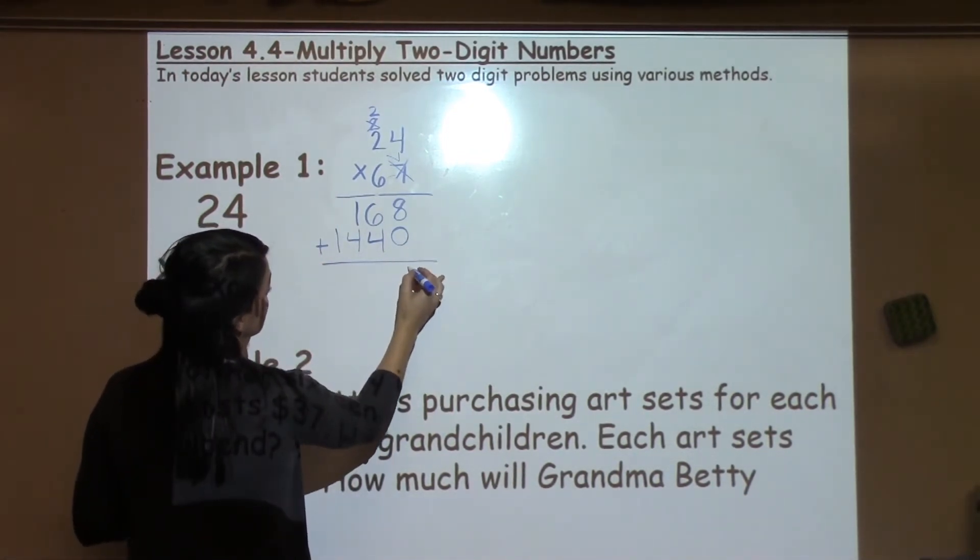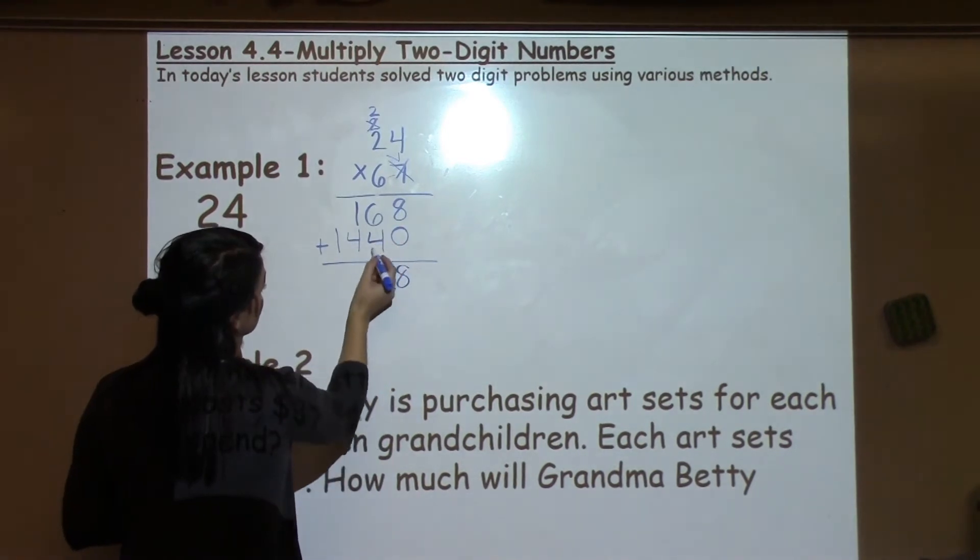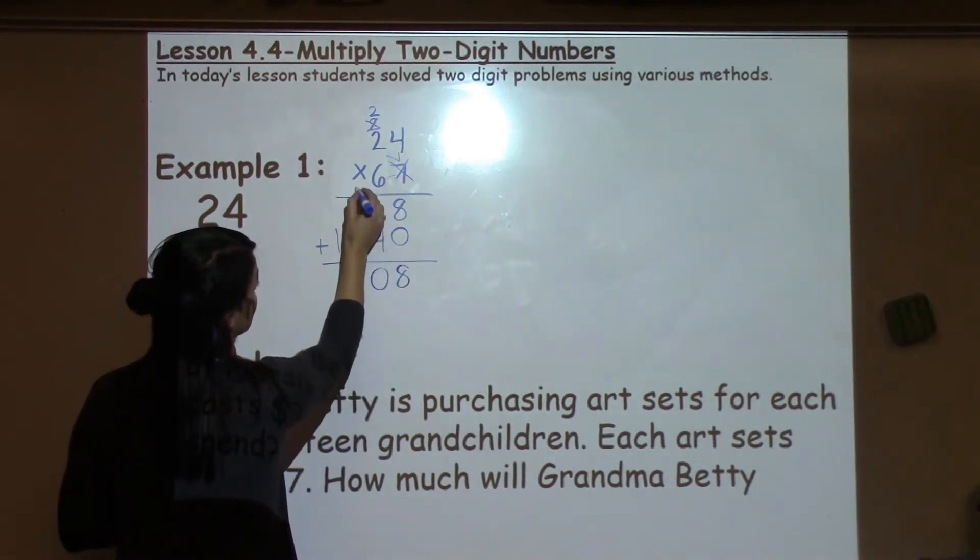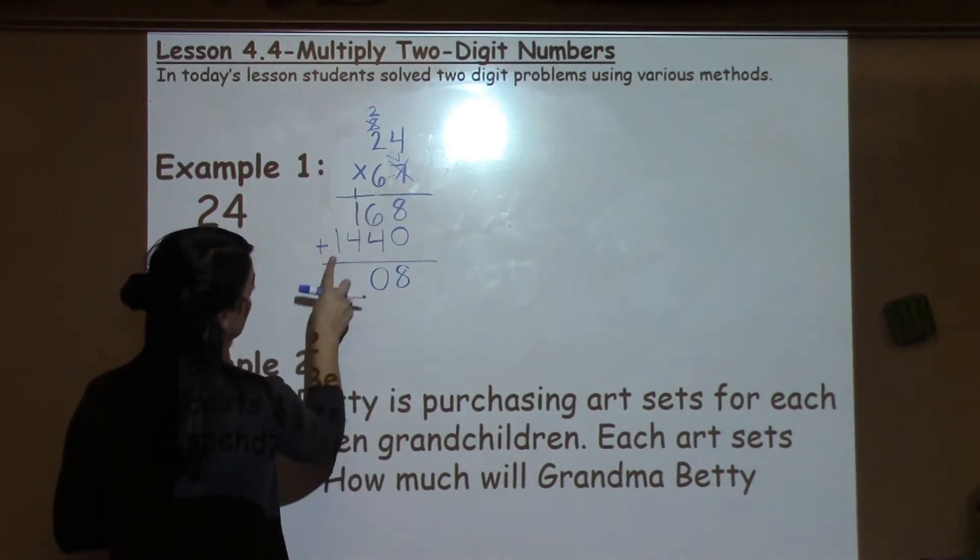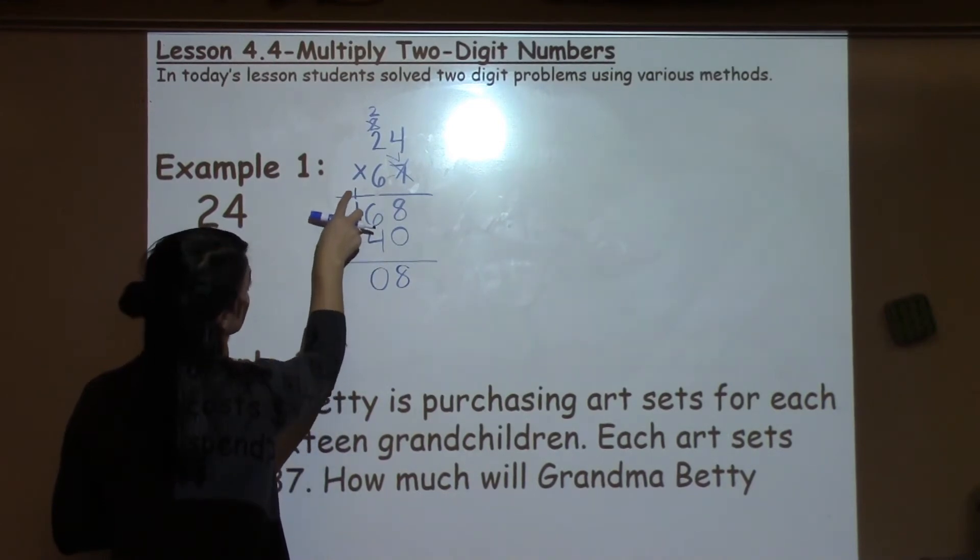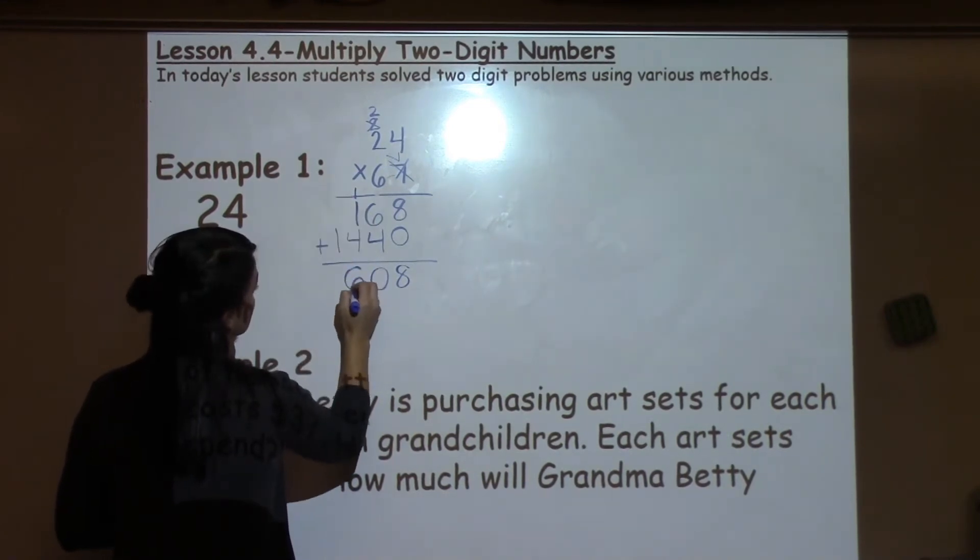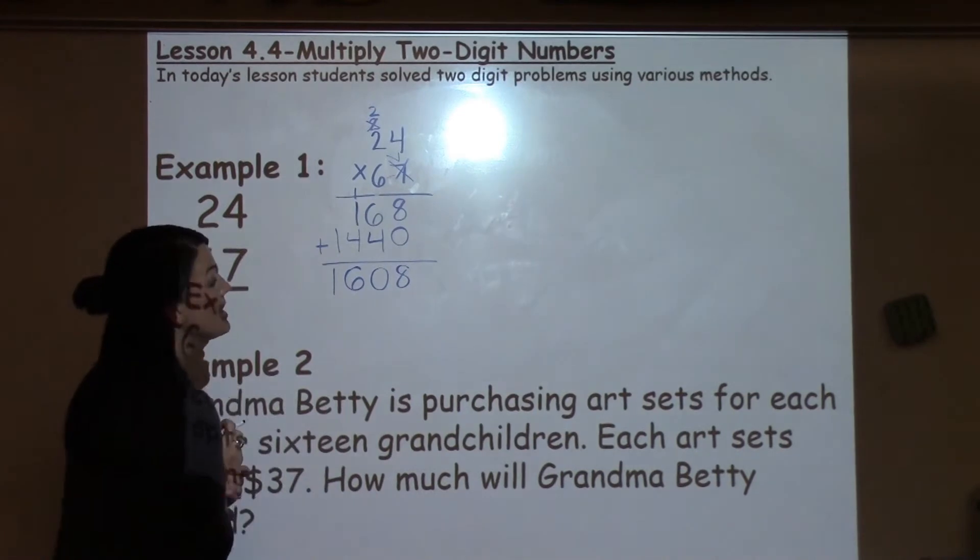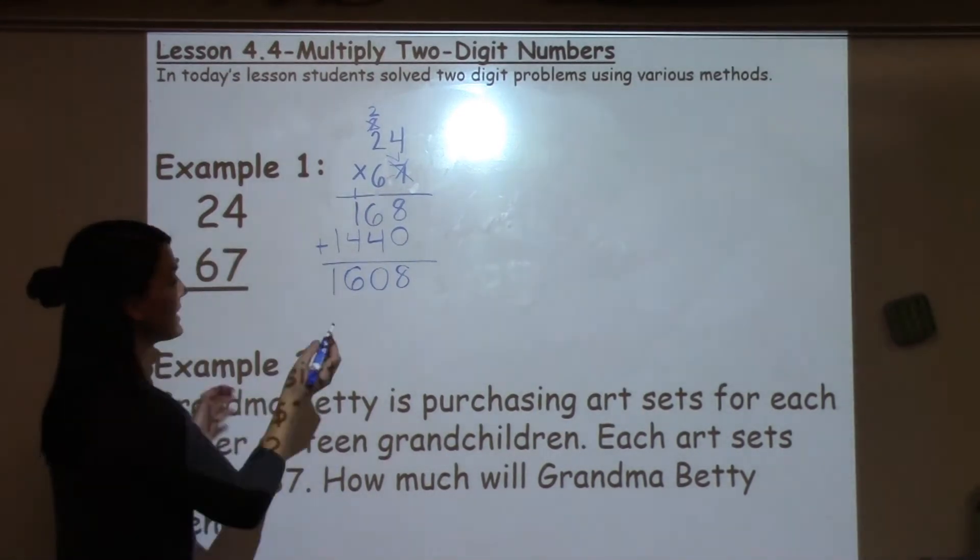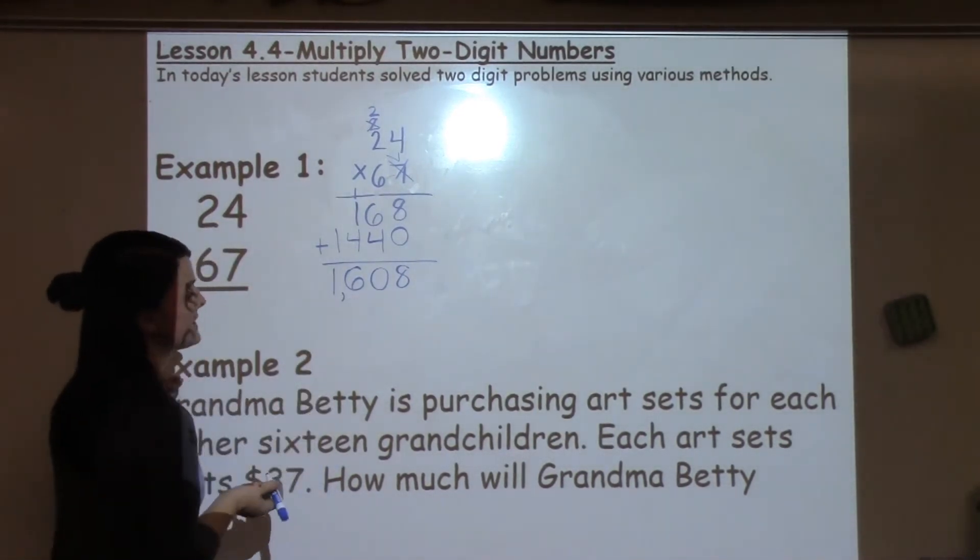So here I've got 8 plus 0, 8. 6 plus 4 is 10. I carry my 1 to the next column. 4 plus 1 is 5 plus another 1 is 6. And then I just have 1 for the last problem. So my final answer is 1,608.